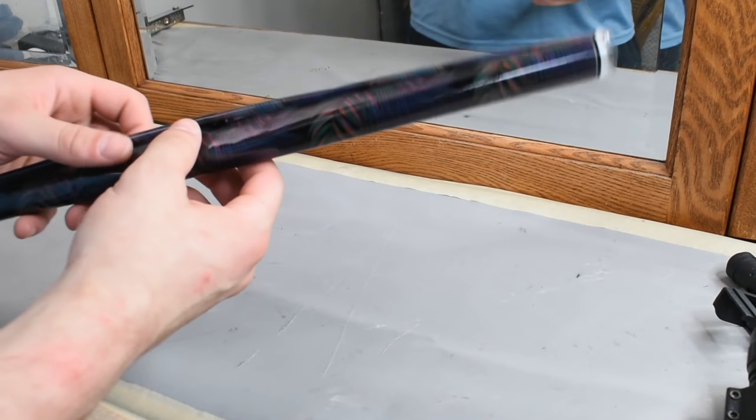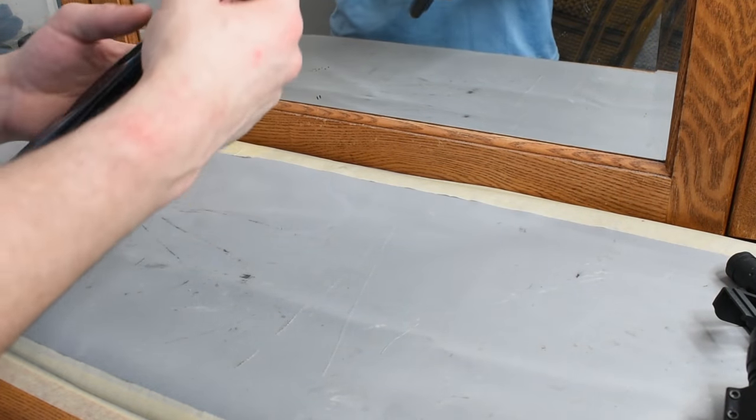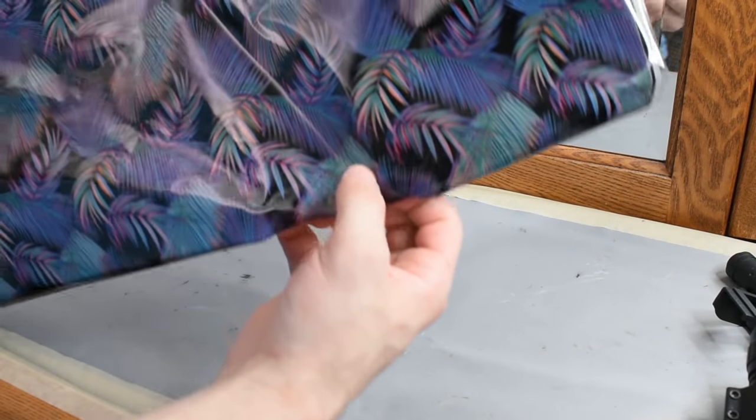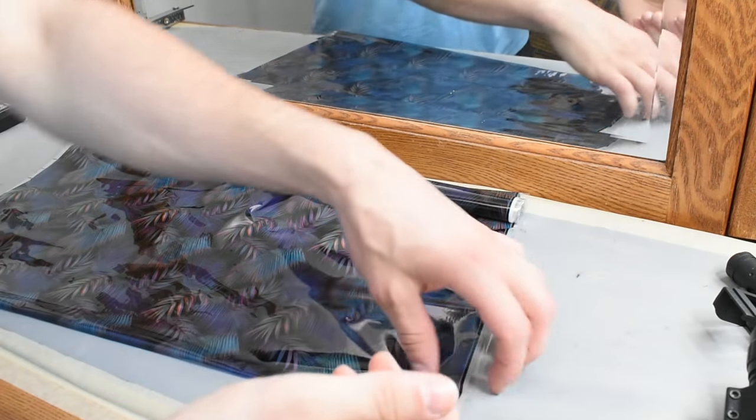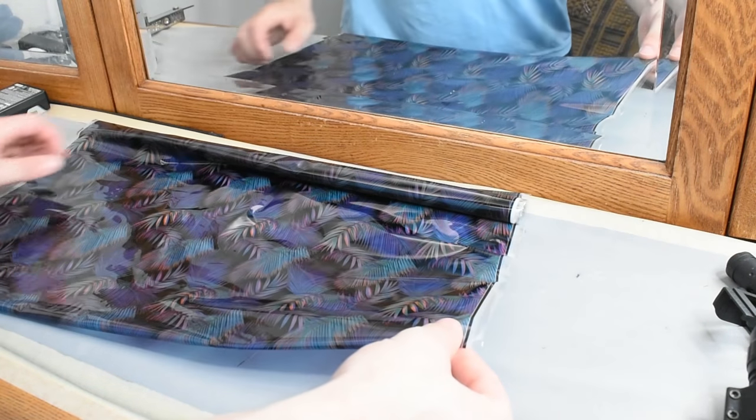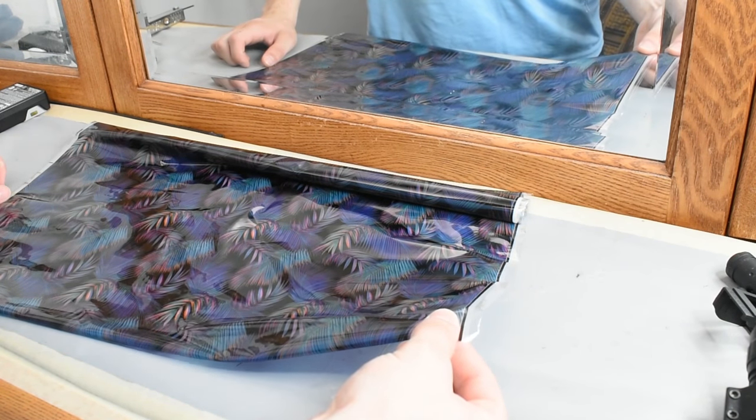Once the white coat has dried, it's time to prepare for the hydro dip. First I need to cut and tape my graphic. For most graphics there is a shiny side and a matte side. The shiny side almost always faces down in the water. If you're unsure which side is supposed to face down, lick the tips of your finger and pinch the graphic. The side that sticks to your finger will be the side that faces down.